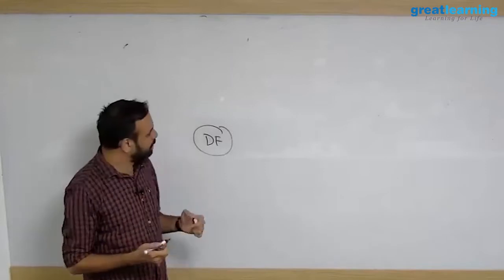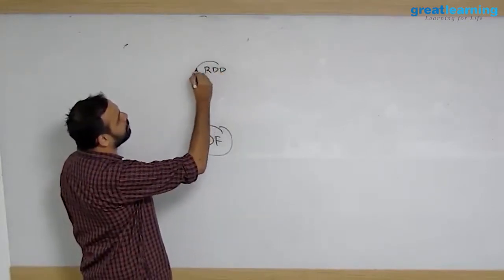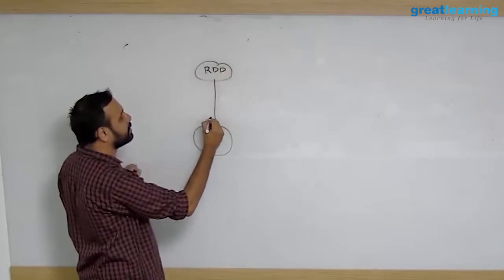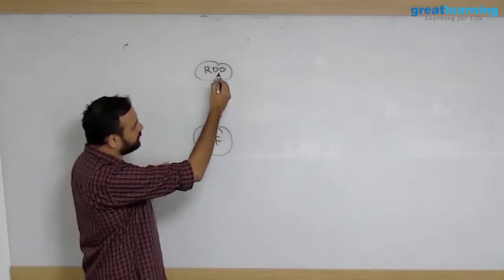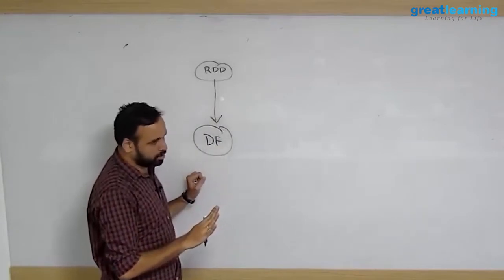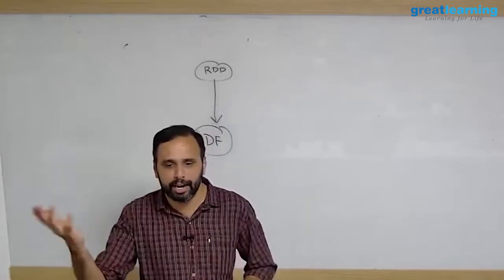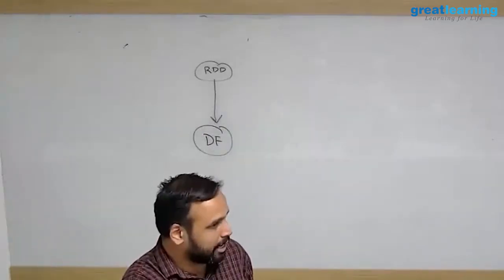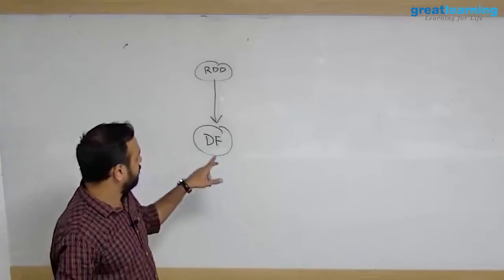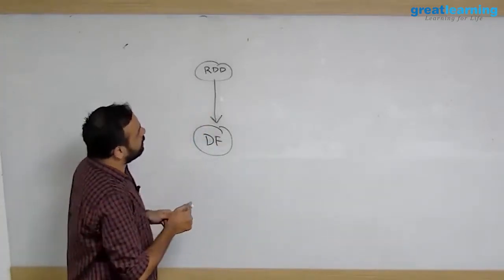One way you can create a data frame is from an RDD. You have an RDD, you can call it and say convert this RDD to a data frame. I will practically show you. There can be situations where your data is an RDD and you want to convert that into a structure like a data frame, so I can call a function to create a data frame.